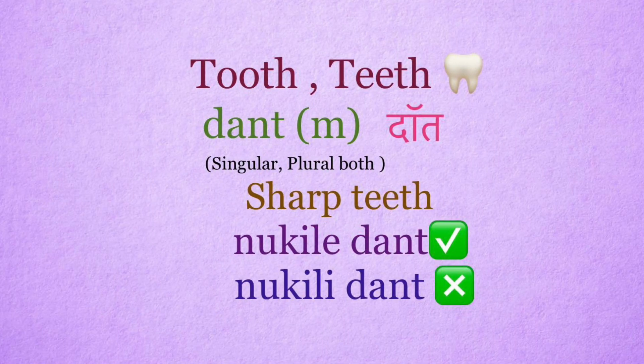Tooth, teeth: daant. It's a masculine word, and the same word is used for both singular and plural. Sharp teeth: right use is nukile daant. Wrong use: nukili daant.